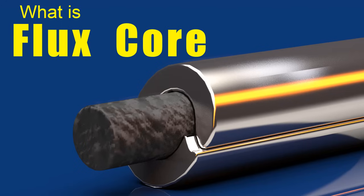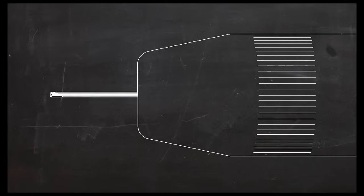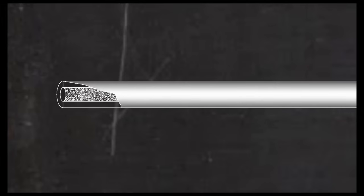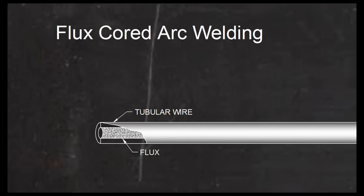What is flux core welding? Flux core is an arc welding process that uses a tubular wire electrode with a flux-filled inner core. The American Welding Society calls this process flux cored arc welding or FCAW.